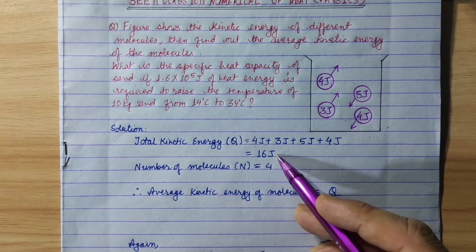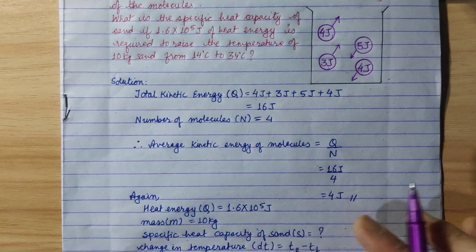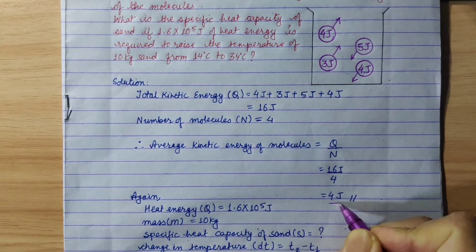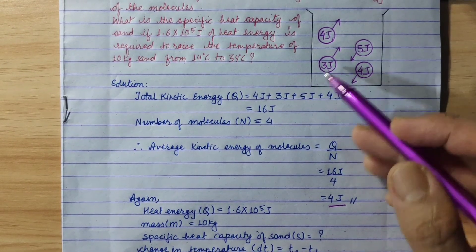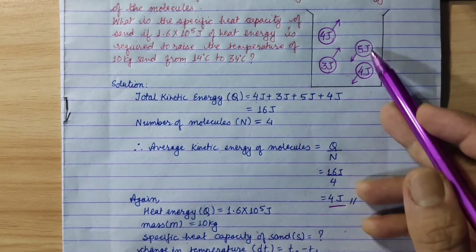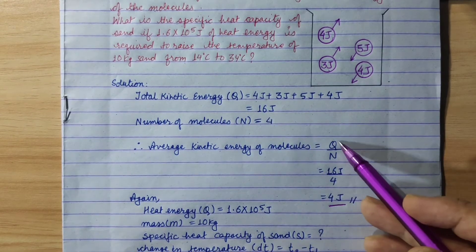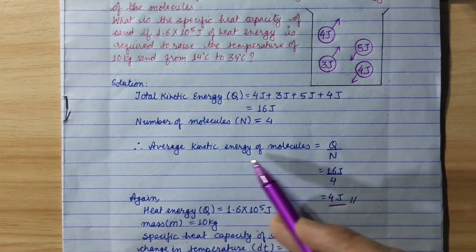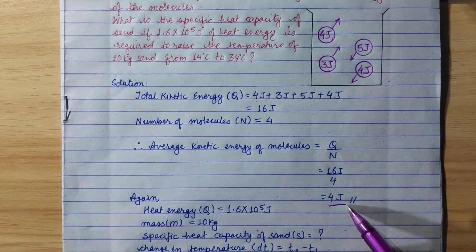So, the total kinetic energy is divided by the number of molecules. 16 joules divided by 4 equals 4 joules. So, the average kinetic energy is equal to 4 joules. That is the answer for the first part.